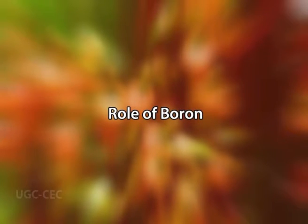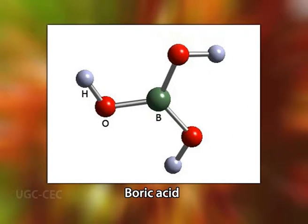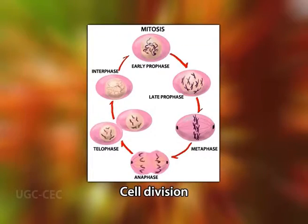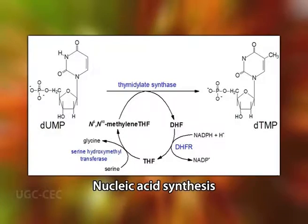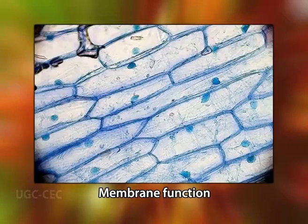Boron is present in aqueous solution as the weak acid boric acid. At physiological pH (less than 8), it is found predominantly in the undissociated form, which is preferred for uptake by roots. Although the precise function of boron in plant metabolism is unclear, evidence suggests that it plays roles in cell elongation, cell division, cell differentiation, carbohydrate metabolism, nucleic acid synthesis, hormone responses, fruiting, and membrane function.